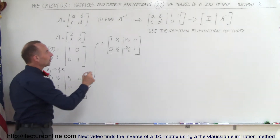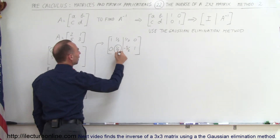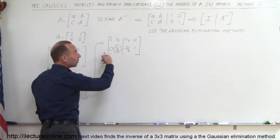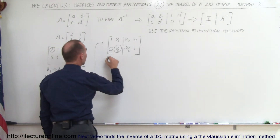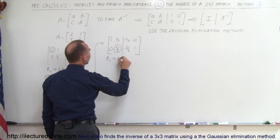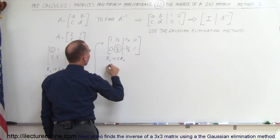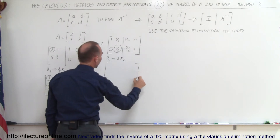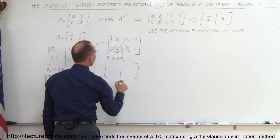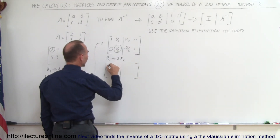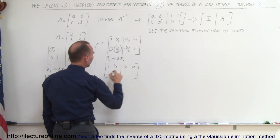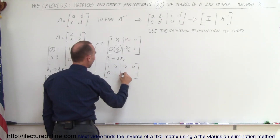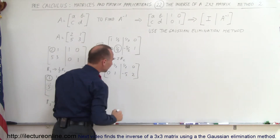Next step: I want to turn the one-half pivot in the second row into a 1. I do that by multiplying the second row by 2, replacing it by twice the second row. The first row doesn't change: 1, one-half, one-half, 0. The second row becomes: 0, 1, negative 5, and 2.